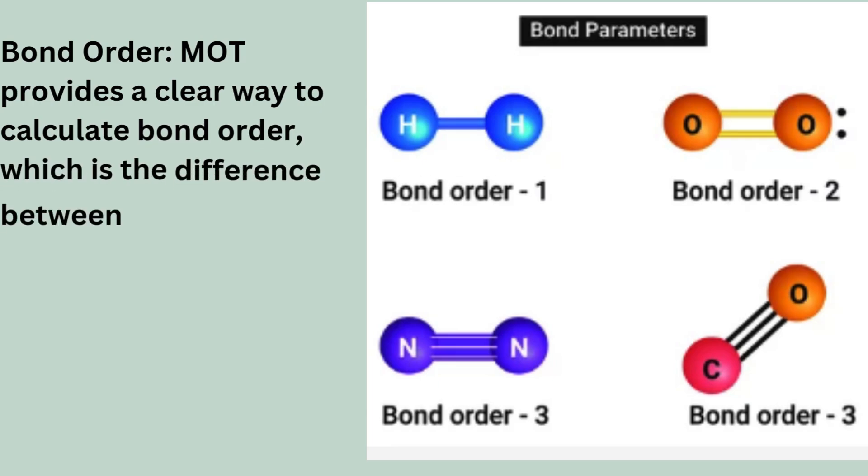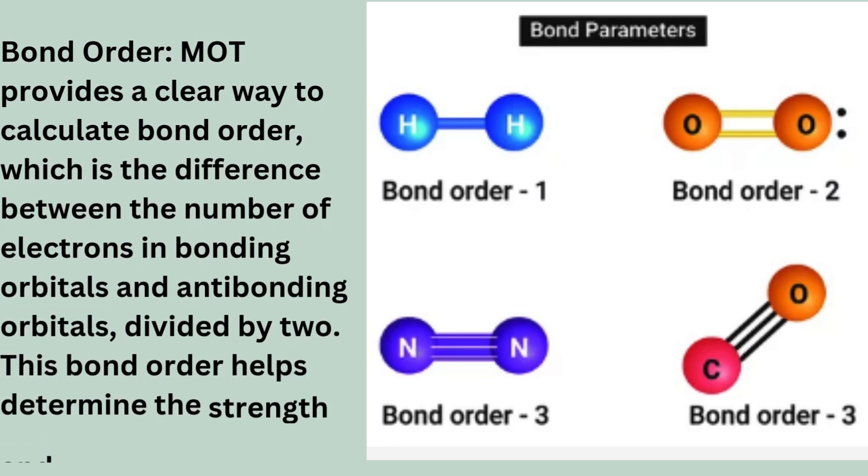Bond Order: MOT provides a clear way to calculate bond order, which is the difference between the number of electrons in bonding orbitals and antibonding orbitals divided by two. This bond order helps determine the strength and stability of the bond.